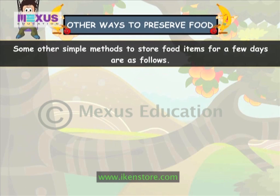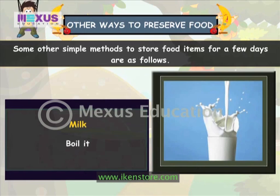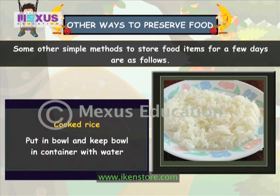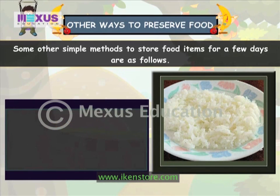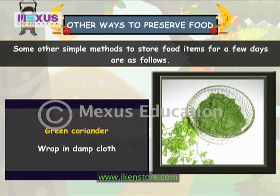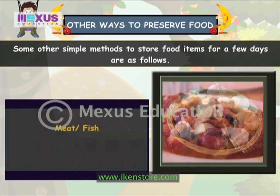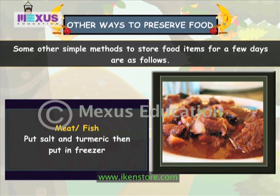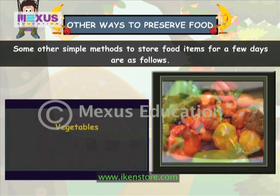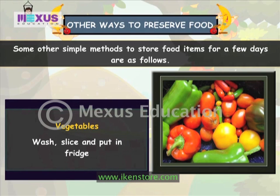Some other simple methods to store food items for a few days are: boiling milk; putting cooked rice in a bowl and keeping it in a container with water; wrapping green coriander in a damp cloth; onion and garlic can be kept in dry open places; meat can be salted and put in a freezer; vegetables can be washed, sliced and kept in the fridge.